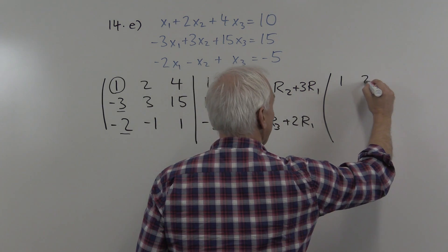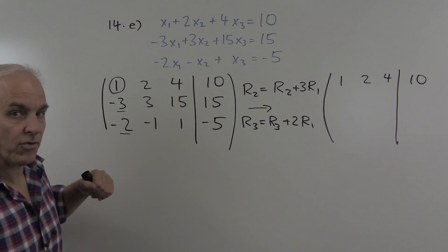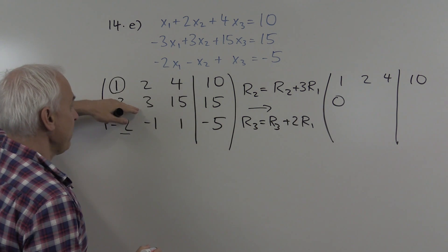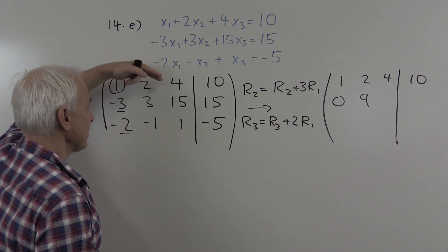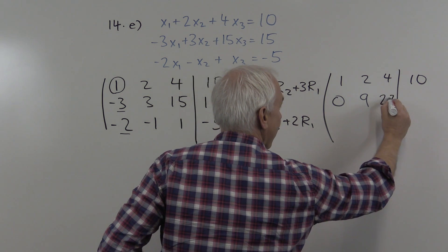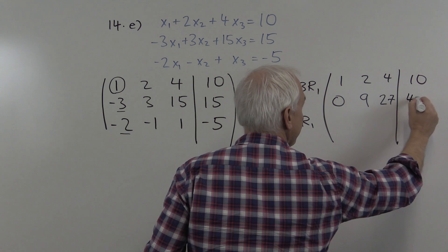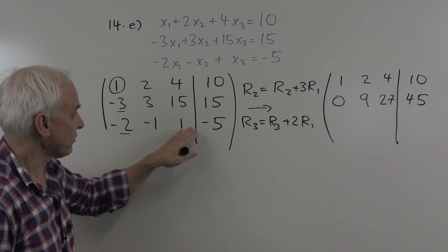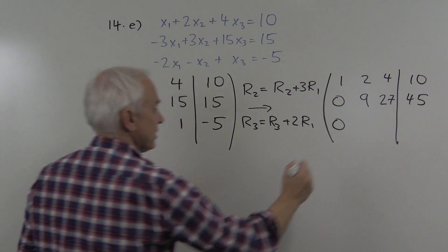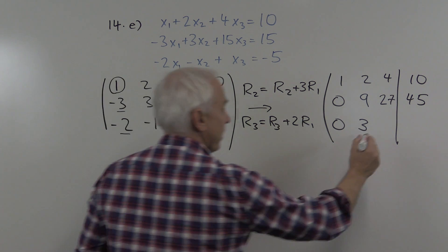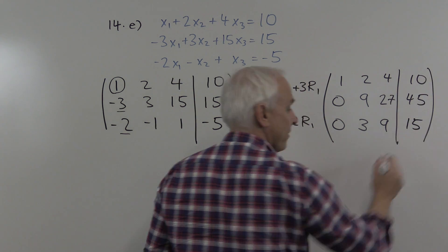The first row stays where it is 1, 2, 4 with a 10. Now we're taking this row and adding three times the first row. So minus 3 plus 3 is 0. 3 plus 6, we have to take 3 times this entry, is 9. 15 plus 3 times 4 is 15 plus 12, that's 27. And on the right hand side 15 plus 3 times 10 is 15 plus 30, that's 45. Now the third row we're taking this third row and adding twice the first row to get a zero here. Minus 1 plus twice 2 is the total of 3. And 1 plus twice 4 is a total of 9. On the right hand side minus 5 plus 2 times 10 is altogether 15.